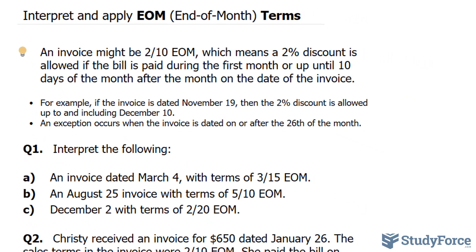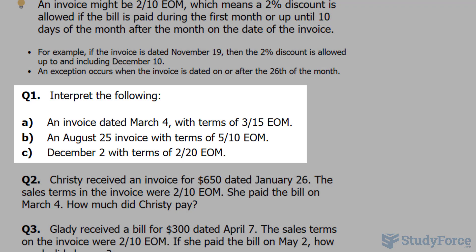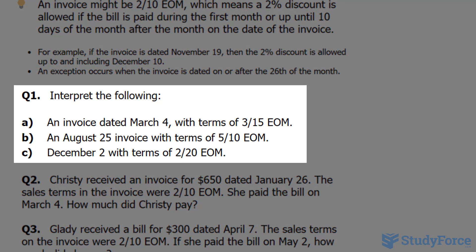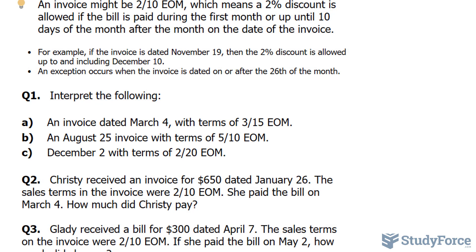The first of three questions reads: interpret the following — an invoice dated March 4 with the terms 3-15 EOM. This means that the person has up until April 15th to receive a 3% discount.